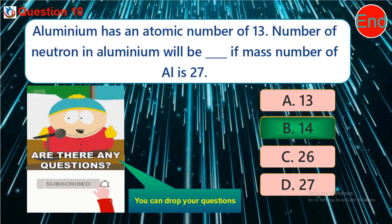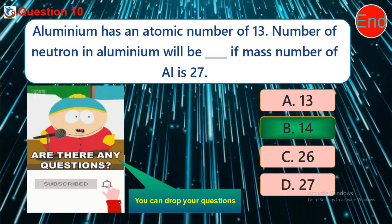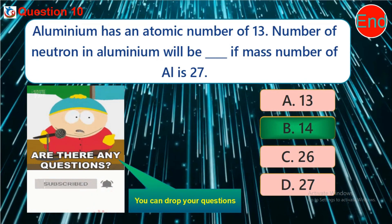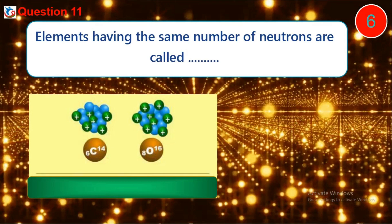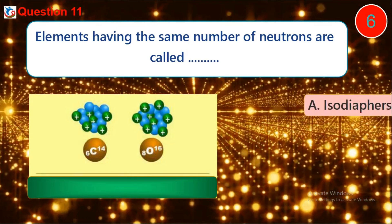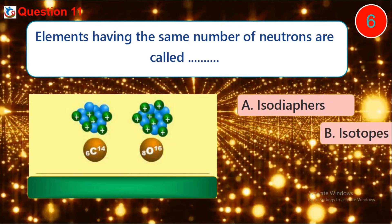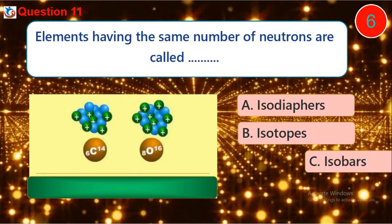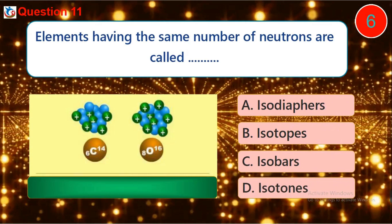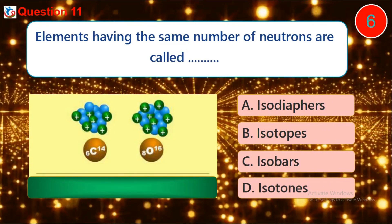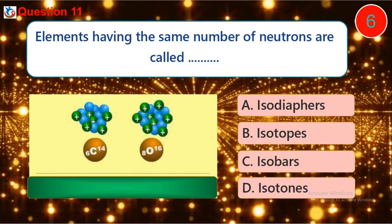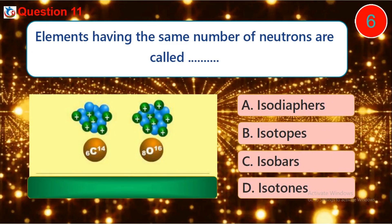Question eleven: elements having the same number of neutrons are called dash. A. isodiaphers, B. isotopes, C. isobars, D. isotones.